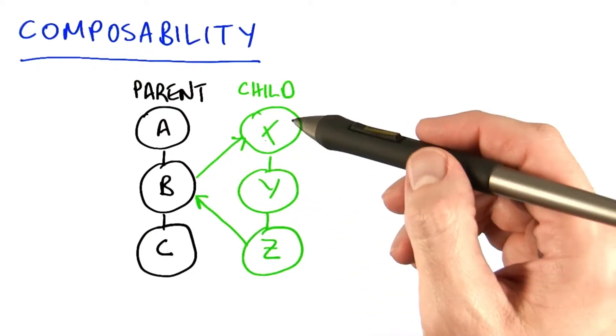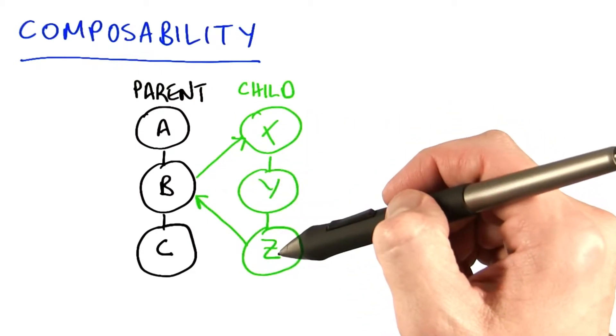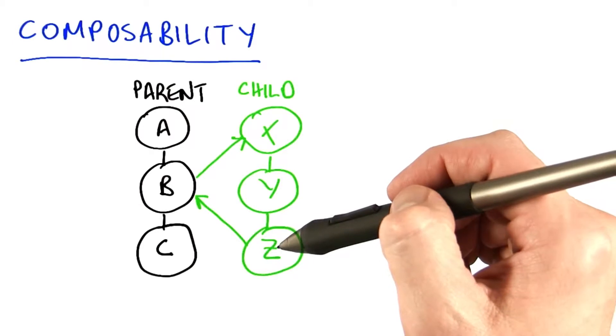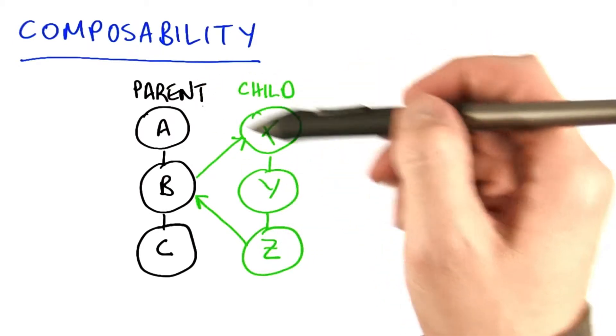So if B creates its own work x, y, and z, we call this child work to B, where B is the parent of x, y, and z.